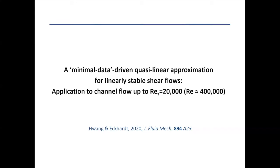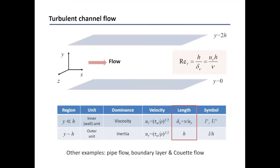What I'm going to propose is using a kind of minimal data to guide the quadrilinear approximation, especially for linearly stable shear flows. I'm going to combine this with stochastic modes similar to resolvent modes, and apply this technique to channel flow up to very high Reynolds numbers. The flow configuration has two parallel walls — lower and upper — with pressure-driven flow. The Reynolds number we use is Re_tau, where u_tau comes from the friction of the wall, representing the velocity scale of the energy dynamics near the wall.